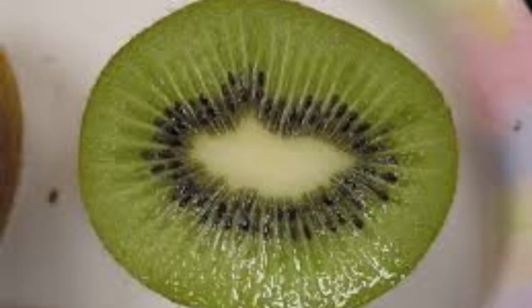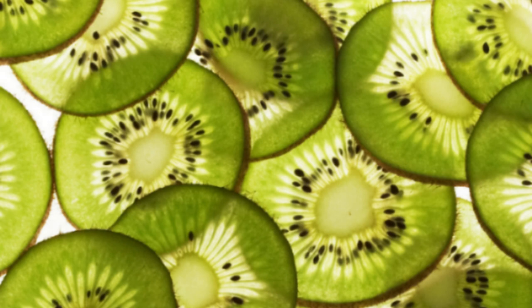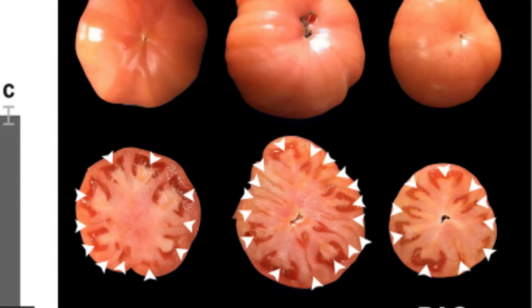The nutritional properties and values of locules vary depending on the type of plant species and the type of locule. However, in general, they are a rich source of essential nutrients and energy-rich compounds, including vitamins, minerals, and carbohydrates. For example, the fleshy locules of fruits like tomatoes and cucumbers are high in vitamins C and K, as well as potassium, magnesium, and dietary fiber.